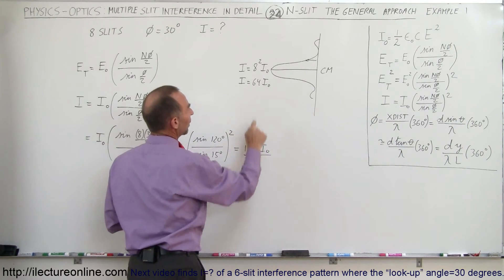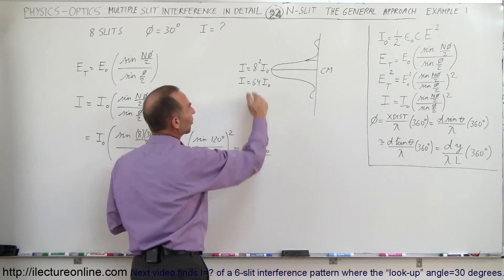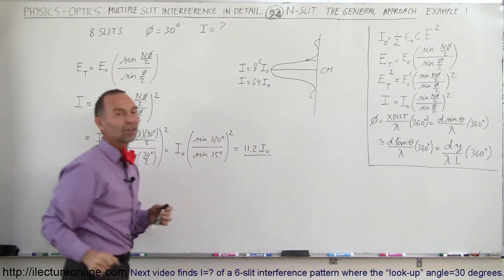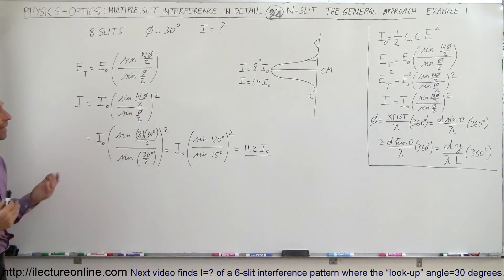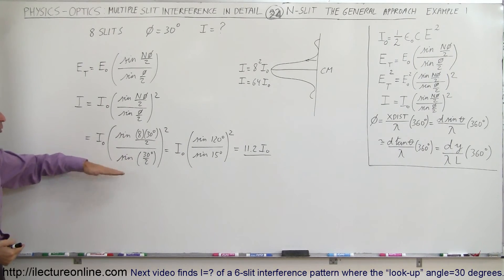And so that would be about one-fifth, one-sixth the maximum of the central max. And that's how we find the intensity of any sort of interference pattern with any number of slits. Simply use this as a general equation and out pops the actual intensity.